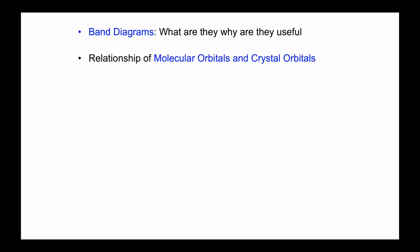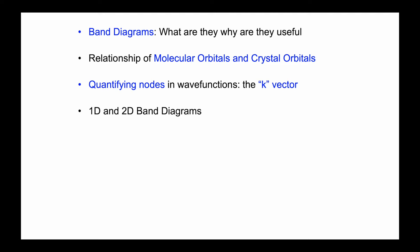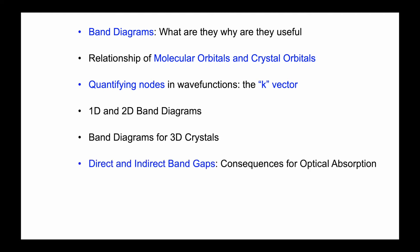In this series of videos, we will be looking at band diagrams — trying to understand what they are and why they're useful. We'll begin with a review of the relationship of molecular orbitals and crystal orbitals, something you've probably seen in Chem 101. We'll then go on to quantify the nodes in wave functions using what's called the k-vector, and develop band diagrams for one-dimensional and two-dimensional systems, then show some of the more complicated band diagrams for 3D crystals. We'll also talk about direct and indirect band gaps and their importance for optical absorption and photovoltaic systems.